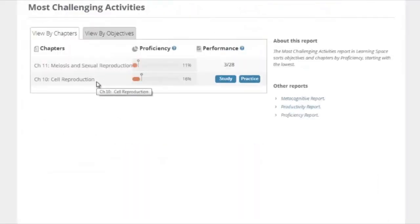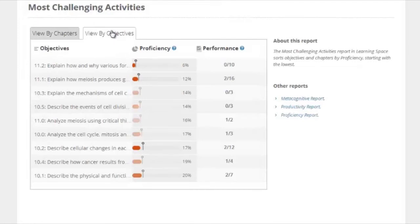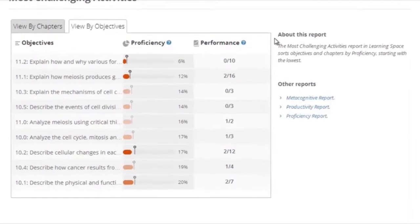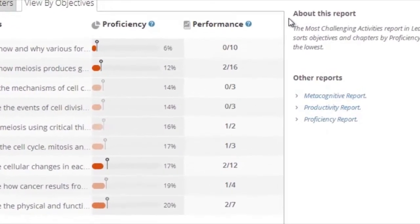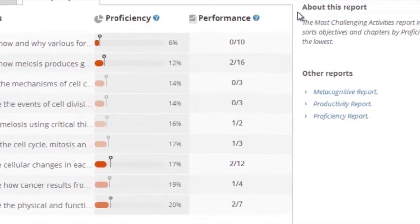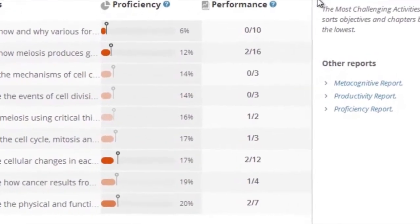Also, the Most Challenging Activities reports enables instructors to immediately see which learning objectives or chapters students find most challenging. Instructors can adapt or curate the course based on the insights derived from observed behaviors and actionable reports. Reports include how students are performing on assignments, as well as a measurement of each student's level of engagement.